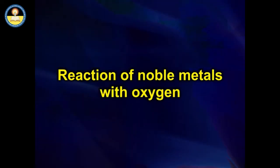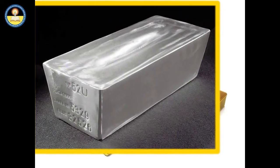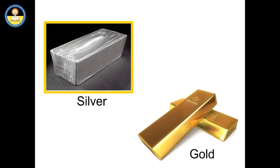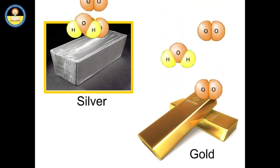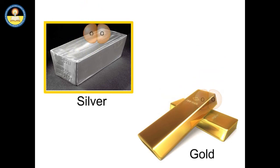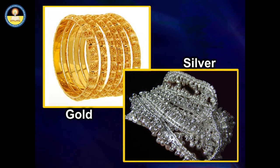Reaction of Noble Metals with Oxygen. Silver and gold do not react with oxygen even on prolonged heating because they are non-reactive metals. It is due to this property that they are used for making jewellery. These metals retain their shiny luster for a very long time.